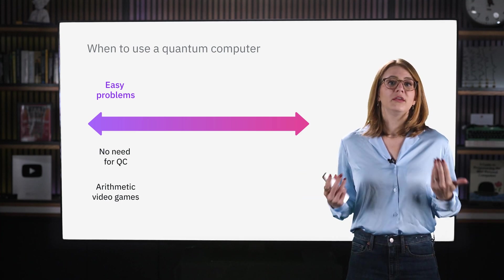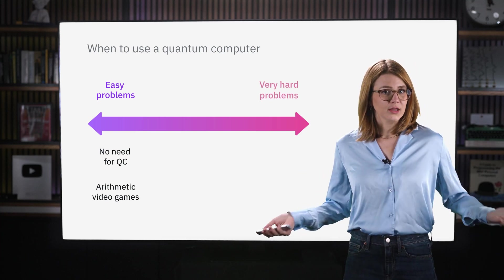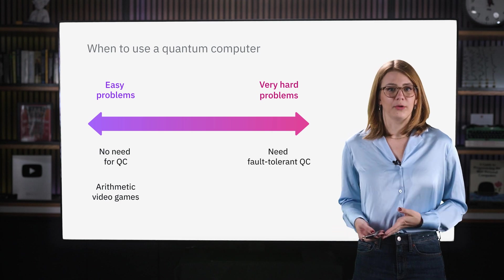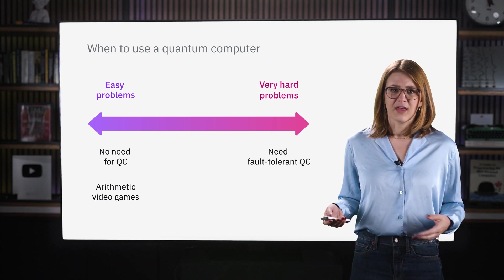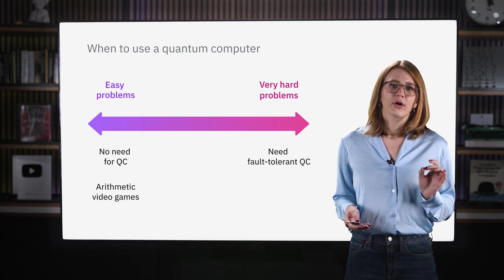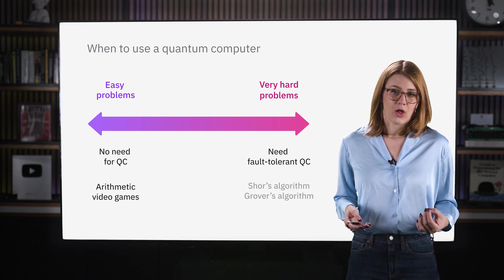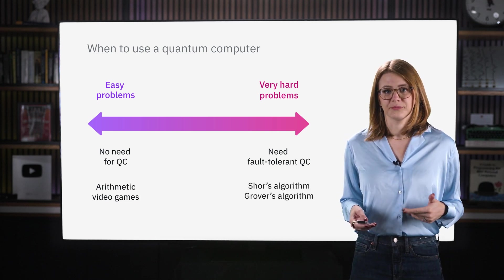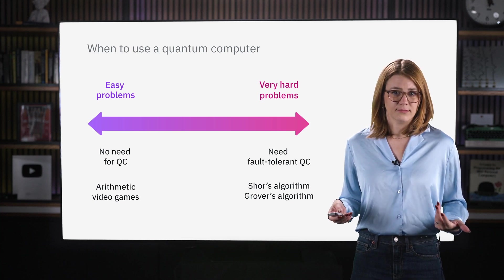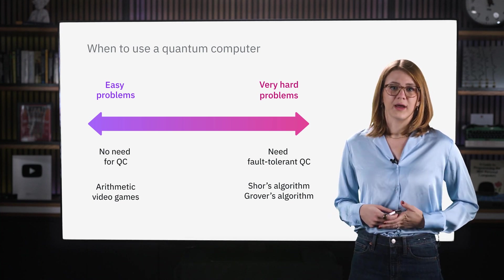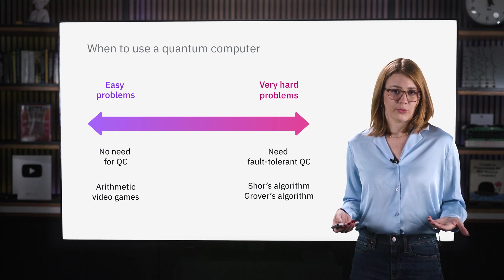On the other hand, there are very hard problems, such as finding prime factors of enormous integers. This is the basis of RSA encryption and what Shor's algorithm was actually designed to solve. Another example is finding a solution in an unsorted dataset. This can theoretically be solved by the quantum algorithm known as Grover's algorithm.